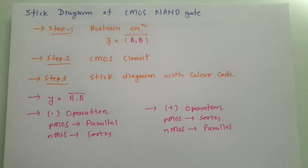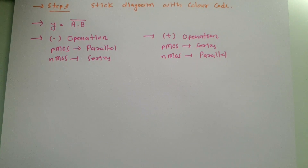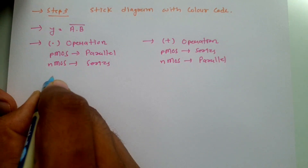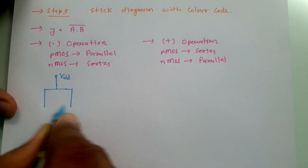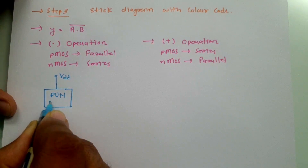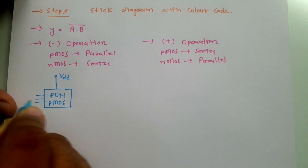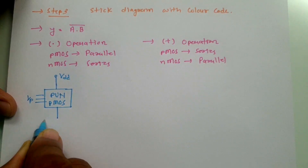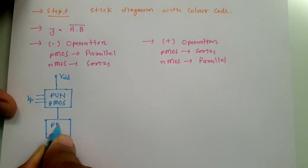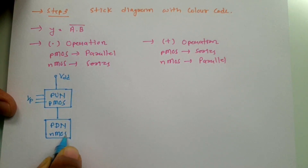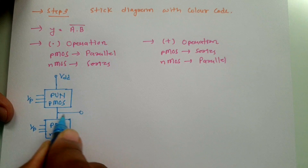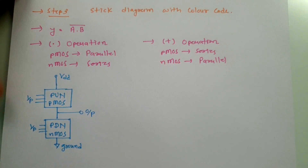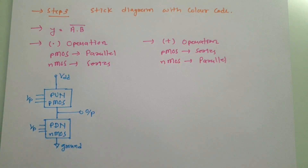Let me explain the basic circuit of CMOS. At the top we have VDD, followed by the pull-up network which contains PMOS transistors — there can be many inputs. After that we have the pull-down network which contains NMOS transistors. At the bottom we have the ground connection, and the output is taken in between the pull-up network and pull-down network. This is the basic standard form of CMOS circuit.